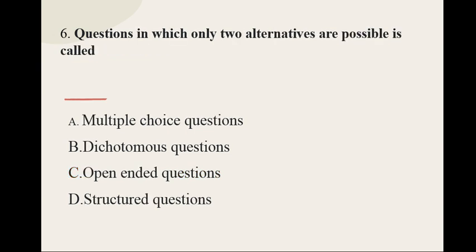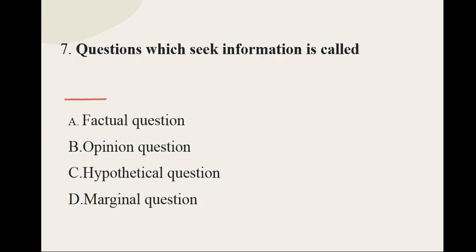Question number six: Questions in which only two alternatives are possible are called — and the options are: multiple choice questions, dichotomous questions, open-ended questions, structured questions. The correct option for question number six is dichotomous questions.